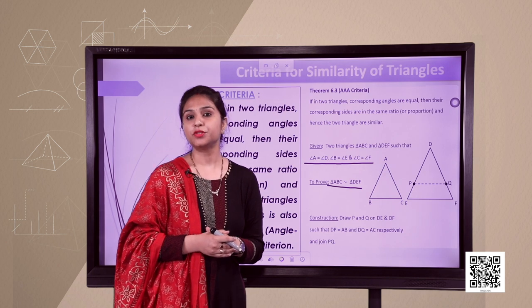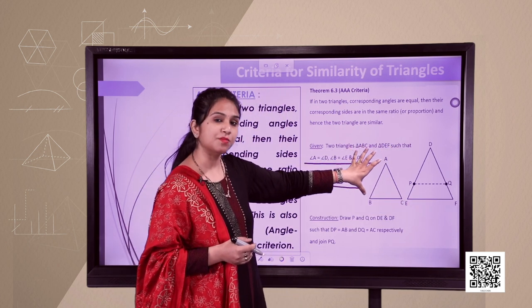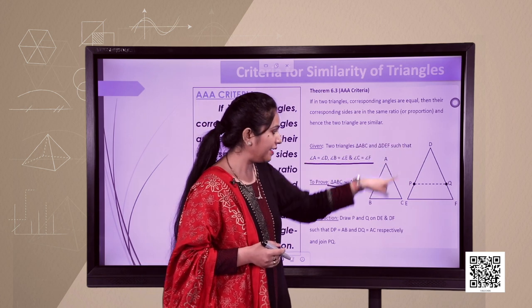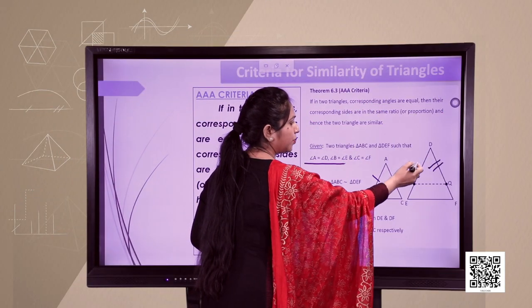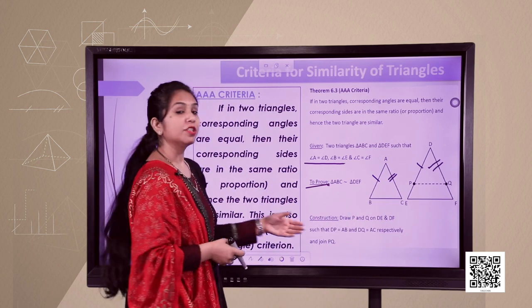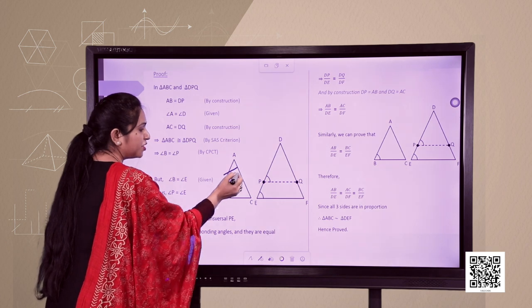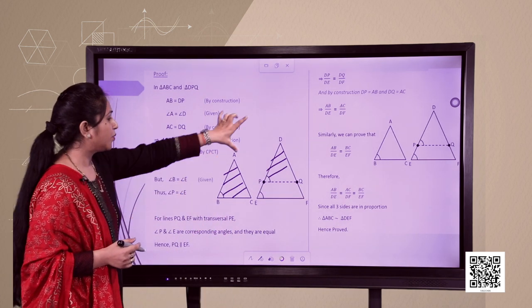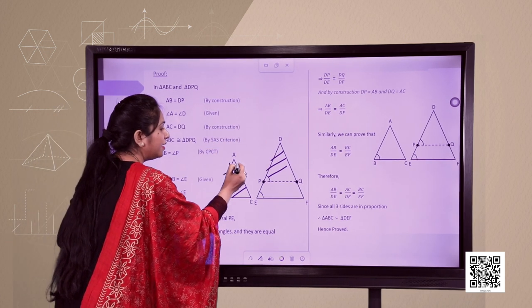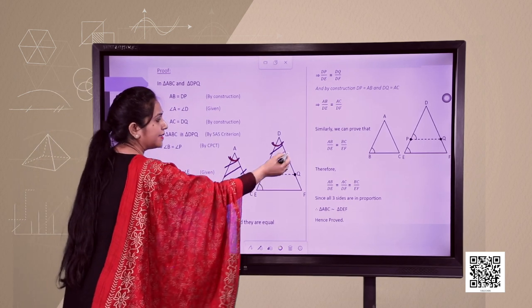We have triangle ABC and triangle DEF. Given that angle A equals angle D, angle B equals angle E, and angle C equals angle F. We need to show the sides are in proportion. For the construction: since AB is smaller than DE, we take point P on side DE and point Q on side DF such that AB equals DP and AC equals DQ.